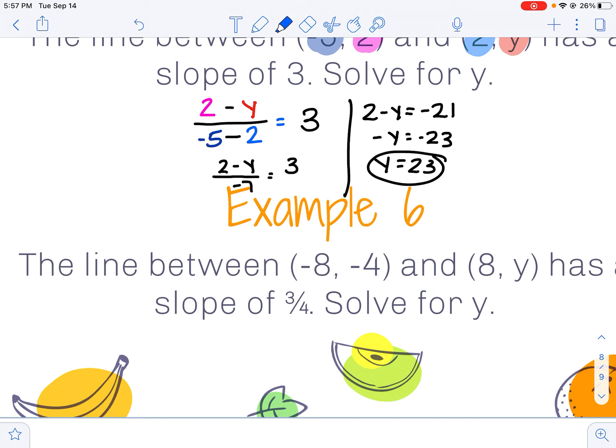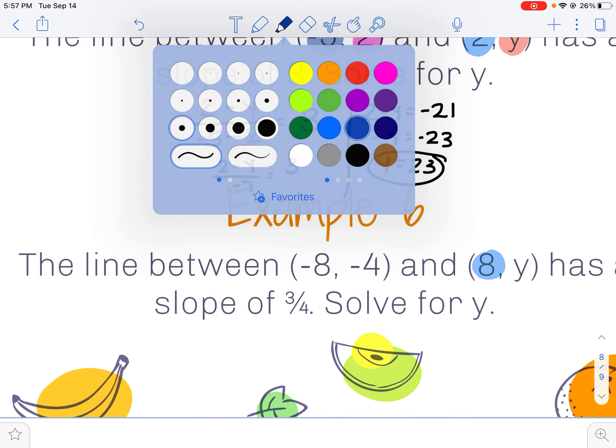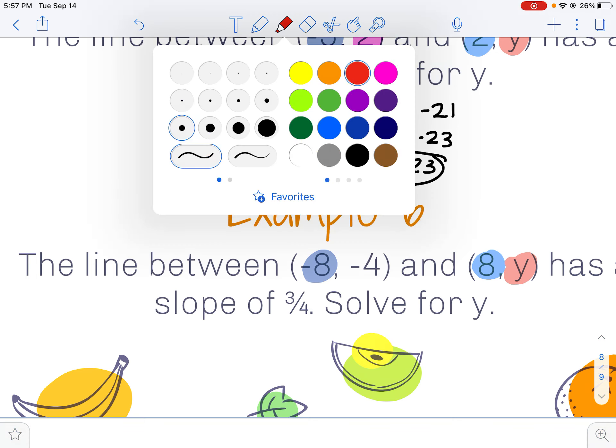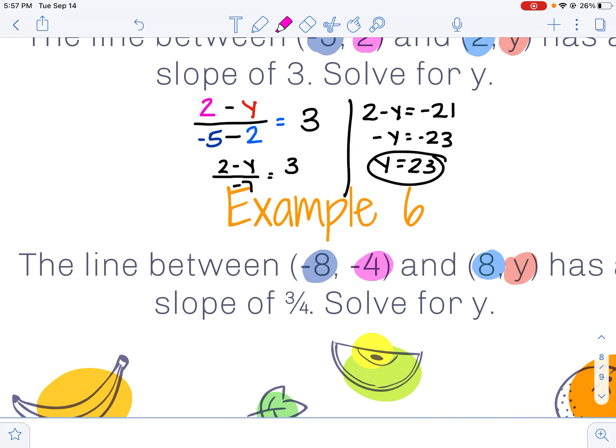Doing one more example just like that. Again, I'm going to color code a little bit so when I fill in my formula you can see where each of my numbers came from. Taking that slope formula.